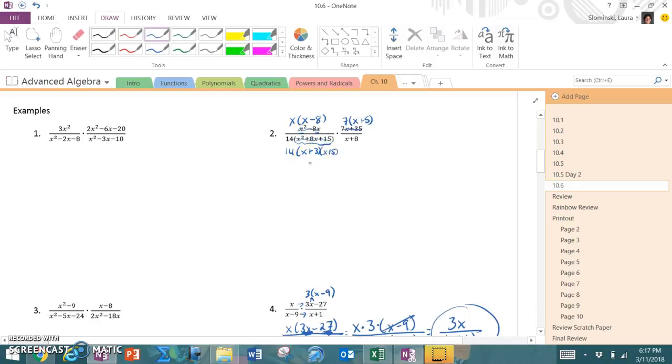So I cancel all those things out. Now, when I go to rewrite it, I multiply across. So the top was x times x minus 8 times 7 times x plus 5, all divided by 14 times x plus 3 times x plus 5. Right away, I recognize that the x plus 5s cancel. I have 7x times x minus 8 over 14 times x plus 3. Oh, I totally forgot my x plus 8, so I should have an x plus 8 on the end here. That's a common mistake. I saw that I just made it. It does not cancel with the x minus 8.